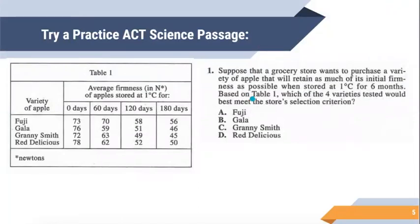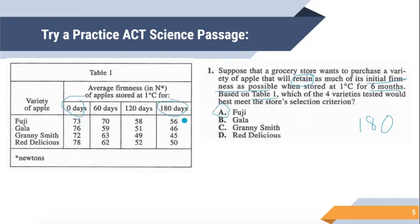Question one asks about table one. It asks which apple variety retained as much of its initial firmness as possible when stored for six months — that's 180 days. 'Retain' means keep, so we're looking at which variety kept the most firmness from zero days to 180 days. The correct answer for question one is A, the Fuji apples. They went from 73 to 56, which is the most retention compared to the other varieties that dropped even lower.